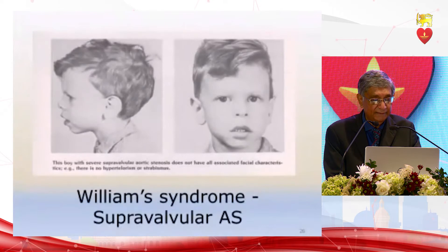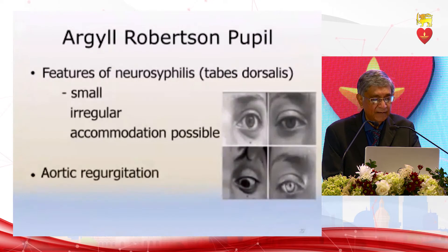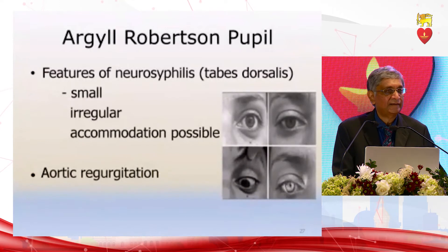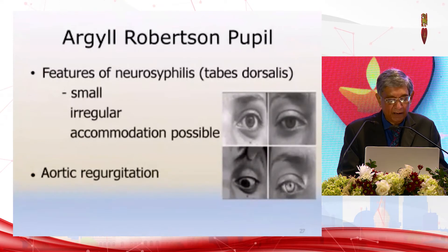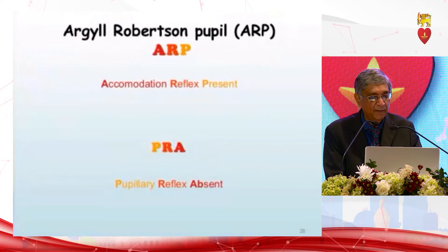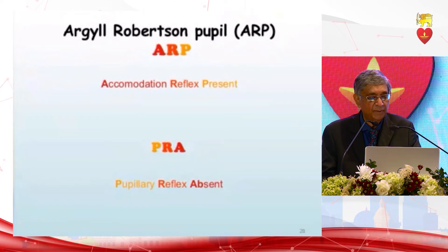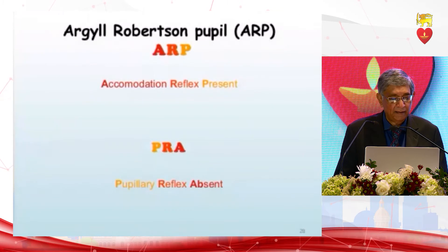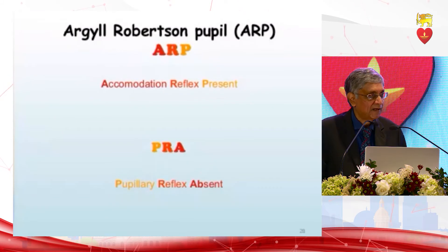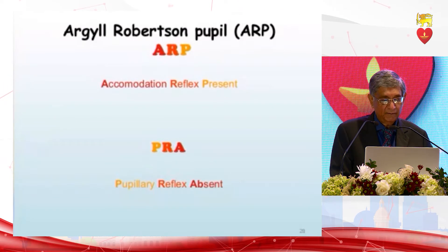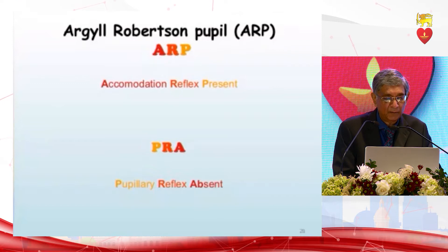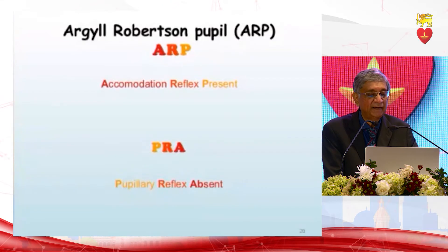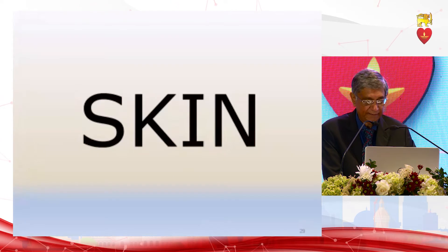Argyll Robertson pupil — though we mention this, it is not seen now. The only thing to remember: ARP stands for accommodation reflex present, pupillary reflex absent. You remember this from physiology when the Argyll Robertson pupil is discussed, but it is now largely redundant as we do not see it.